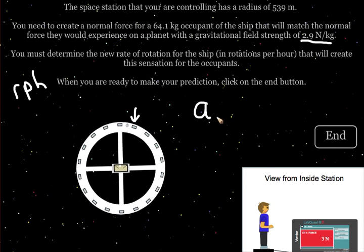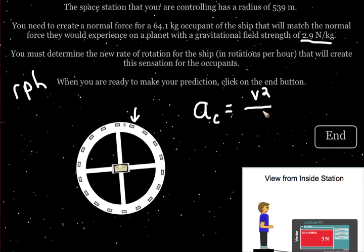Since we're moving in a circle, we use our formula for the circular acceleration, which we know is v squared over r.